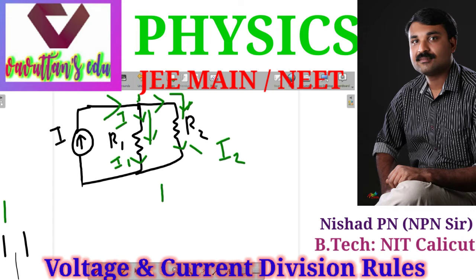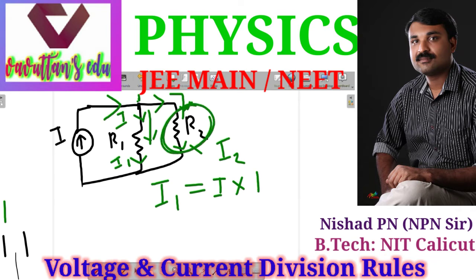We have a relation. I1 is equal to total current I multiplied by other branch resistance R2, divided by total resistance R1 plus R2. This is called the current division rule.